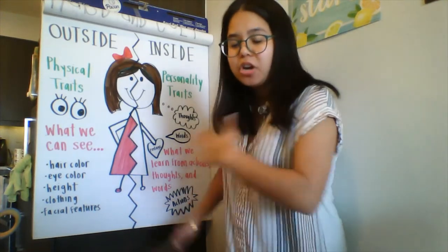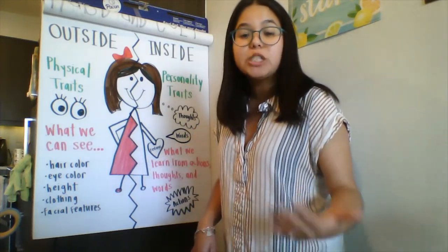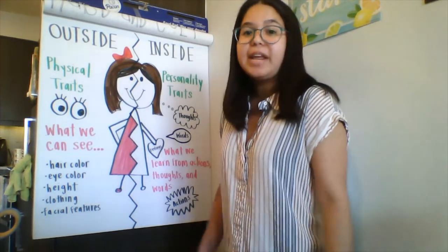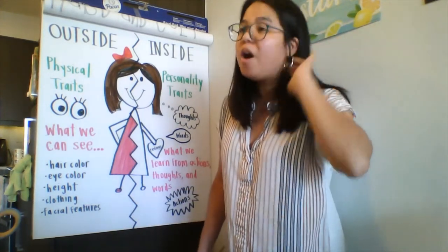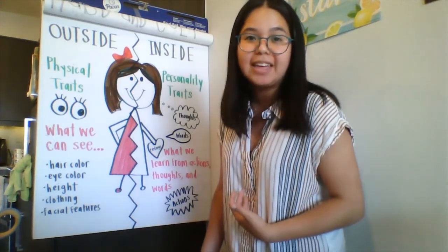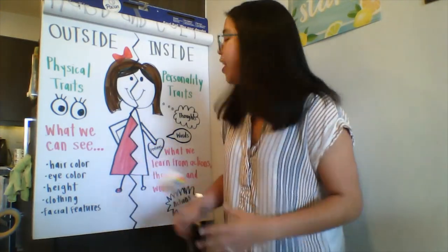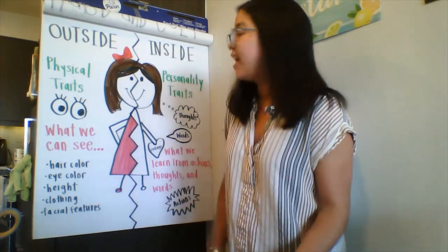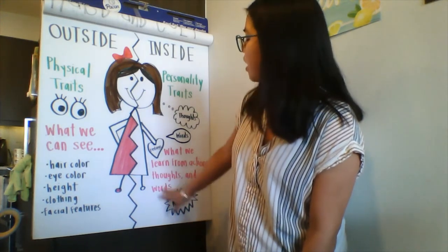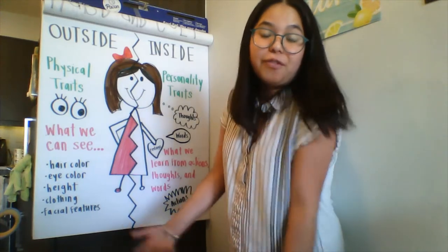If the character knocks something over, then we know that their character trait is probably that they're mad or upset. But if they think something like, 'I really loved and enjoyed that present that my teacher got me,' then we can kind of assume that they're happy or that they're excited about their gift. Personality traits are what we learn from the actions, thoughts, and the words that the character says, or maybe that your friend says.